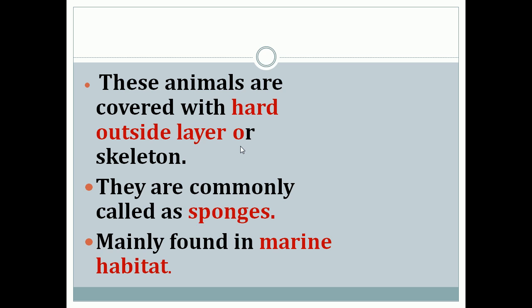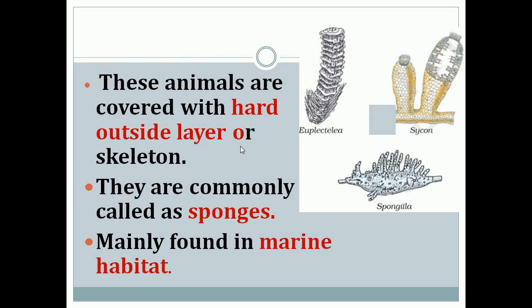Porifera are mainly found in marine habitat. Examples of organisms which come under Porifera — commonly called sponges — are Euspongia, Sycon and Spongilla.